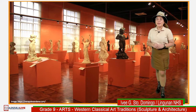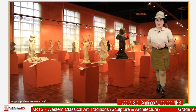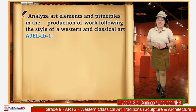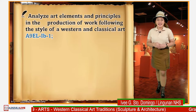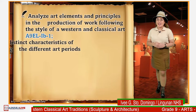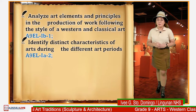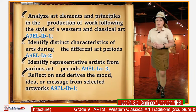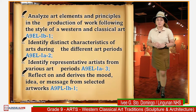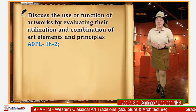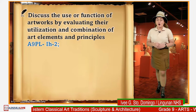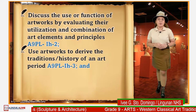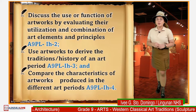I hope everyone will be guided by the protocols for us to maintain order during our session. At the end of our Art Wonderful Expedition, you are expected to: analyze art elements and principles in the production of work following the style of Western and Classical art; identify distinct characteristics of arts during the different art periods; identify representative artists from various art periods; reflect on and derive the mood, idea, or message from selected artworks; discuss the use or function of artworks by evaluating their utilization and combination of art elements and principles; use artworks to derive the traditions or history of an art period; and compare the characteristics of artworks produced in the different art periods.